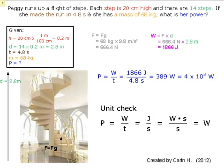And she made the run in 4.8 seconds, which is right there. And that is in brown, which is the time, which is also in the given box right over here. And the mass is 68 kg, which is in orange. And the power that we have to find is in blue, which is right there.